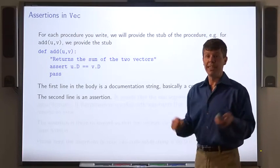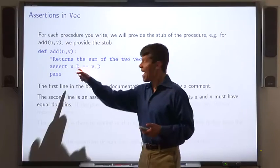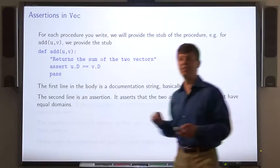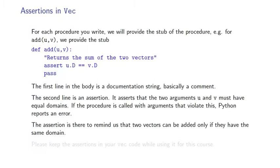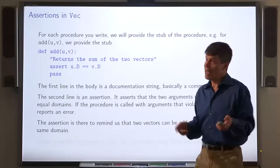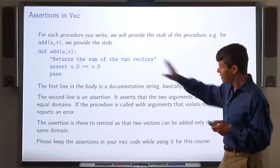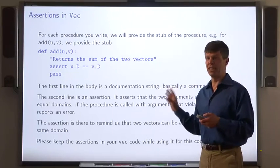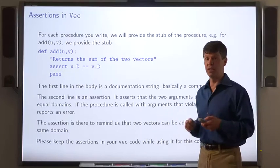It asserts, in this case, that to add two vectors, the domains have to be equal sets. Now, if this procedure gets passed two vectors with different domains, it'll report an error. The assertion is there to remind us of a rule of vector addition, namely that you can't add vectors whose domains are different. So let's keep the assertion in the code. At least when writing procedures that use it for this class.